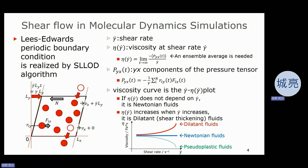The viscosity of the system is defined by the equation. If we plot the viscosity against the shear rate, there are three types of viscosity curves. The most usual one is the Newtonian fluid. Its viscosity does not depend on the shear rate. The viscosity of the dilatant fluid increases if the shear rate increases, while the viscosity of pseudo-plastic fluid decreases if the shear rate increases.